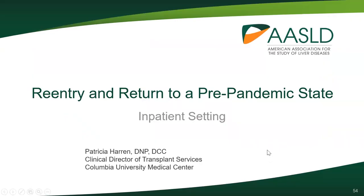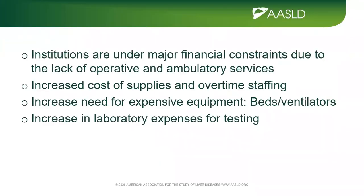Patricia Heron will now talk about re-entry and return to a pre-pandemic state on the inpatient side. Institutions are under major financial constraints due to the lack of operative and ambulatory services, draining financial reserves. This is compounded by increased high-acuity admissions exceeding bed capacity, increased costs of supplies and overtime staffing, increasing need for expensive equipment like beds and ventilators, and a large increase in laboratory expenses — putting several institutions in a position of financial uncertainty.